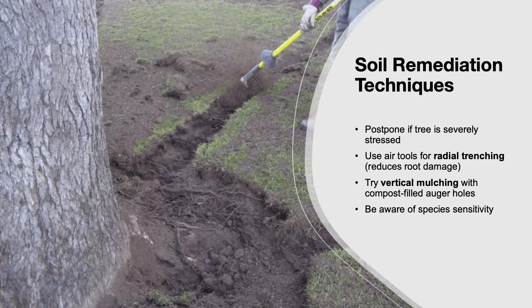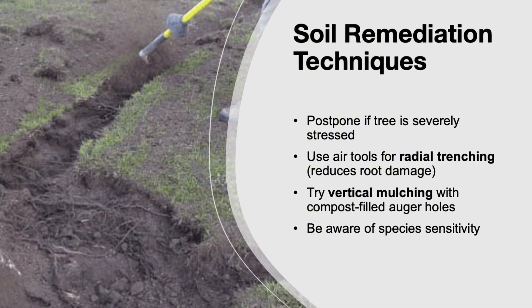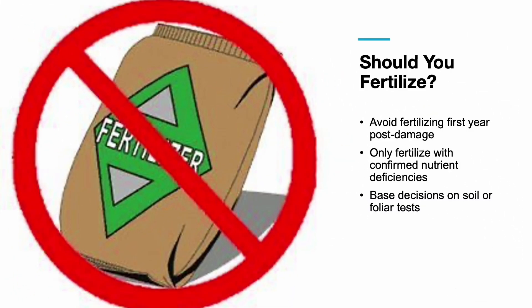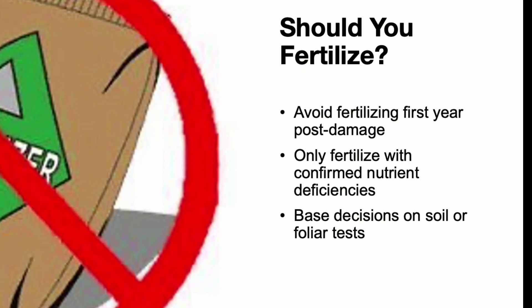Correcting compaction post-construction is difficult and can cause additional root damage. When needed, use techniques like radial trenching — making radial lines through the root zone using air excavation tools. Avoid mechanical trenchers. Another option is vertical mulching, which involves drilling holes filled with compost or loose soil. These methods offer limited success but are sometimes worth trying after trees have been stabilized. Fertilizer is not recommended in the first year after damage. Root injury reduces water and nutrient uptake, and excess fertilizer can cause stress. Only fertilize based on confirmed deficiencies from soil or foliage tests.